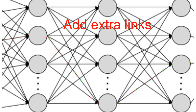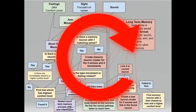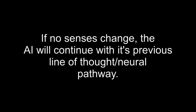It will also add additional links to all the neurons referenced on the neural pathway it took. The AI constantly repeats the short-term memory process to ensure every moment is captured, though it will only create new neurons when the sight, vision, or feelings change.